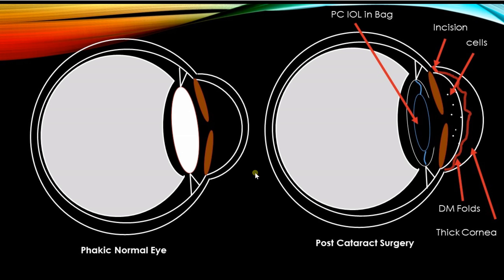Once the posterior surface becomes flatter, the Descemet's membrane — which is present on the tightly curved posterior surface of the cornea — tends to become lax. It becomes loose and forms folds. These are called Descemet's membrane folds, which we typically see in these patients. When the edema is significant enough, endothelial pump failure leads to edema of the epithelium as well.